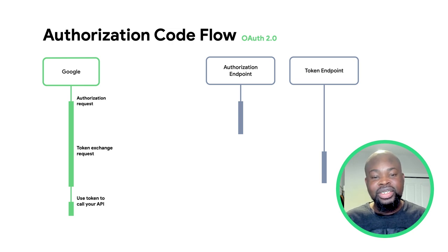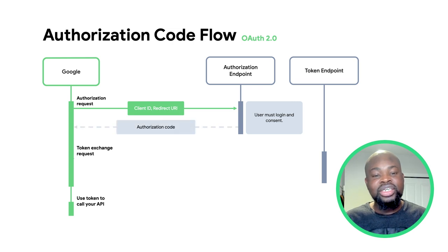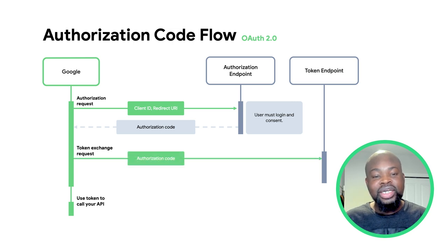The following steps are completed in the authorization code flow. A user gesture, such as a button press or click event on a Google application, starts the linking process. Google directs the user to your authorization endpoint, where they log in and consent to having their data shared. Your authorization endpoint generates an authorization code and returns it to Google via the redirect URL specified in the initial request to your endpoint. Google then sends the authorization code to your token endpoint, which verifies the authenticity of the code and returns an access token and a refresh token.